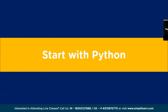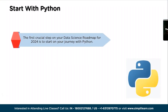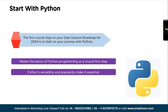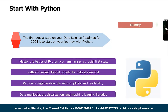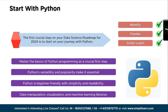The first crucial step on the data science roadmap for 2024 is to start with Python. Begin by mastering the basics of Python programming. Data scientists primarily use Python or R, but Python's versatility and widespread adoption make it an indispensable choice. Its simplicity and readability make it accessible for beginners while offering immense power for advanced analytics. You will gain proficiency in data manipulation, visualization, and machine learning libraries such as NumPy, Pandas, Matplotlib, and Scikit-learn.